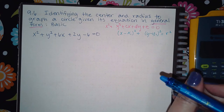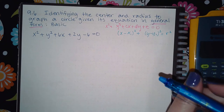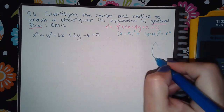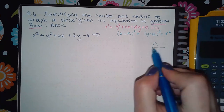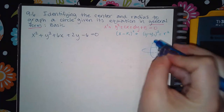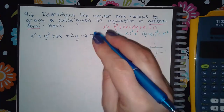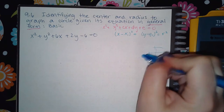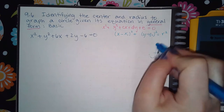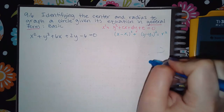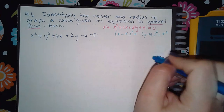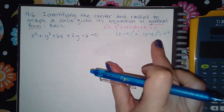An ellipse is like an egg shape, whether the egg is oriented vertically or laying down — that egg shape occurs when there are coefficients in front. When there are no coefficients on the x squared and y squared, then we know it's a circle.